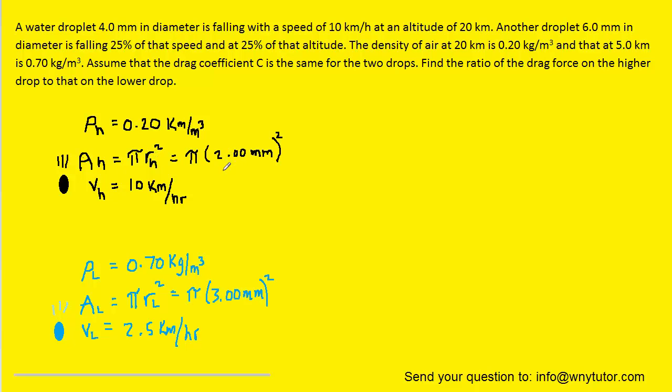So for the higher drop, we've actually substituted in 2 millimeters for the radius because the diameter was 4 millimeters. And also for the lower drop, we took its diameter which was 6 and cut it in half to make 3 for the radius.